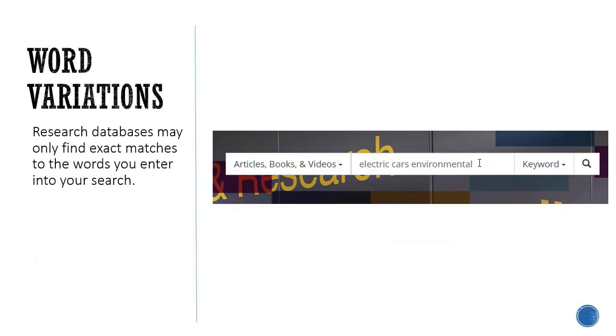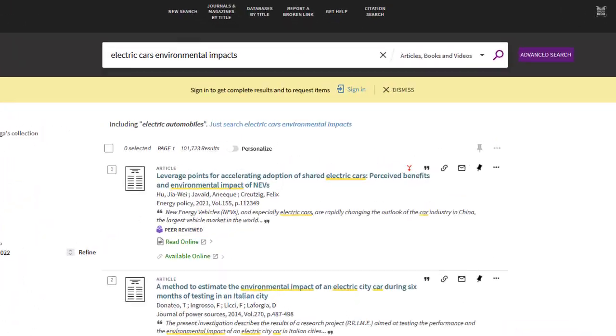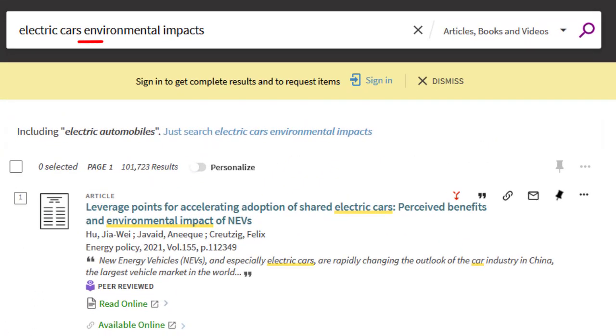In contrast, research databases may only find exact matches to the words you enter into your search. Here, only articles containing the word environmental are found.